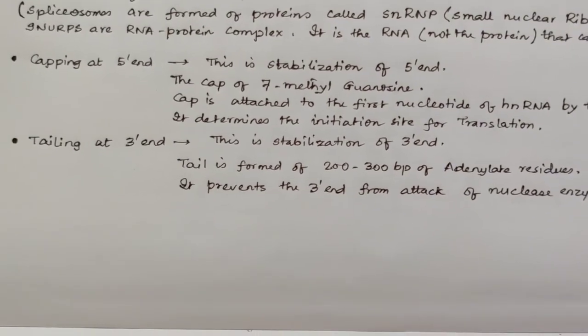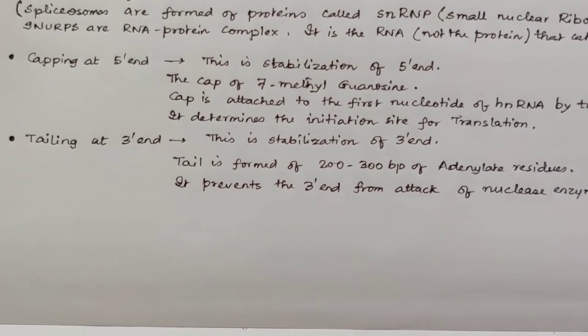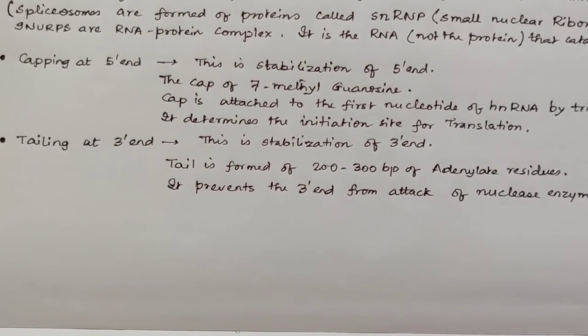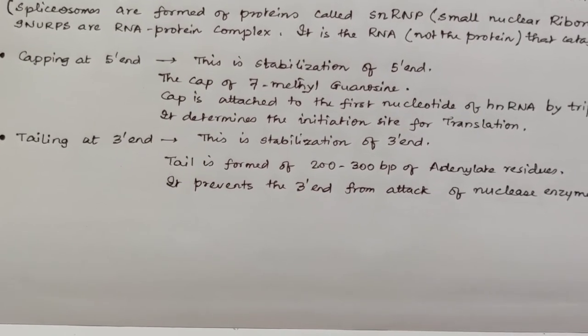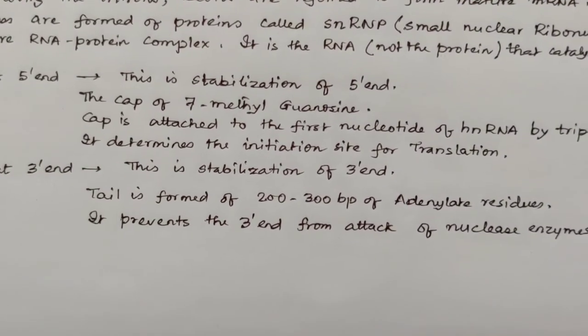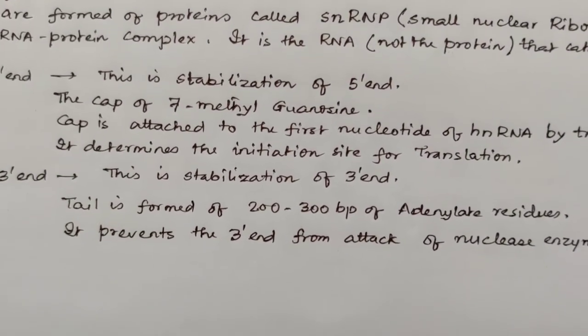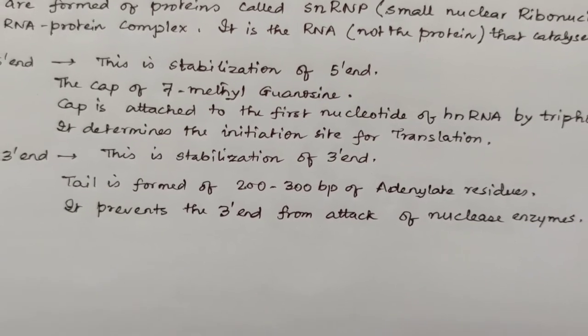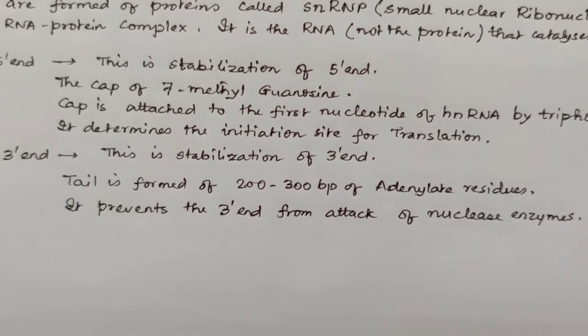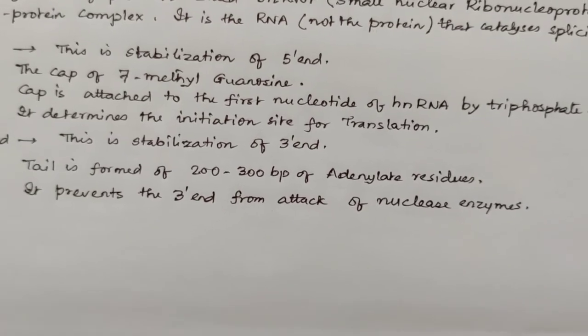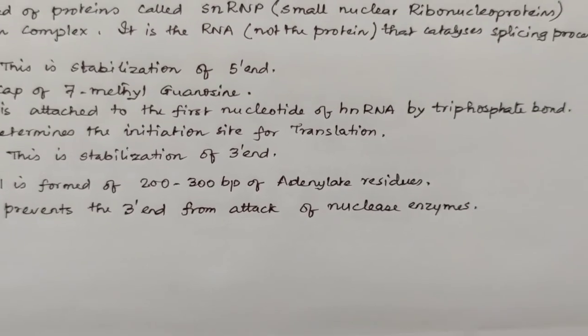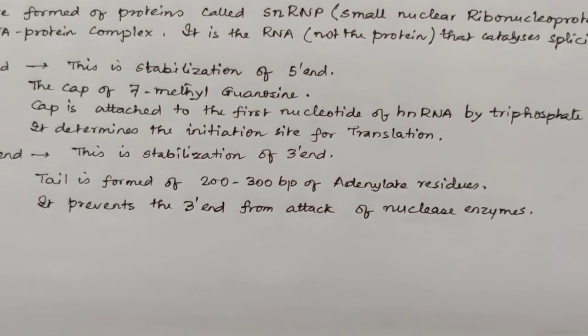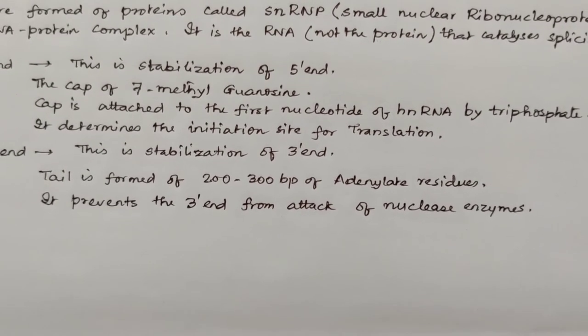The second part of post-transcription modification is capping, which is done at the 5' end. This is the stabilization of the 5' end. A cap of 7-methylguanosine has to be attached at the 5' end of RNA. The cap is attached to the first nucleotide of hnRNA by a triphosphate bond. It determines the initiation site for translation.